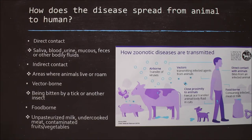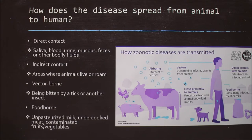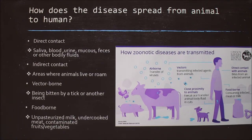So let's talk about how zoonotic diseases are spread. There are basically four different methods. First, direct contact — where you come into contact with a bodily fluid from the animal, like saliva, blood, mucus, feces, or urine. Indirect contact is from places where animals live or roam, like pasture or grass, so you want to be careful when you're walking. Vector-borne — going back to the plague — that's where it's within a host like a tick, and when they bite you they inject it. Food-borne — unpasteurized milk, undercooked meat, or contaminated fruits and vegetables that have feces on them and aren't properly rinsed, like E. coli contamination.